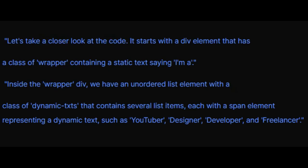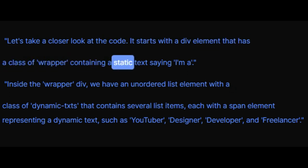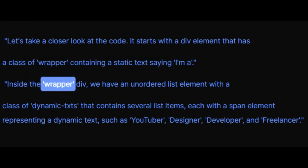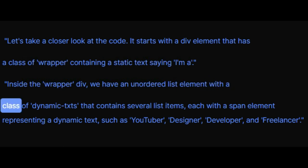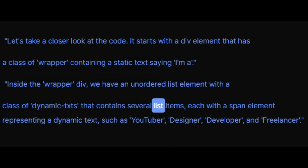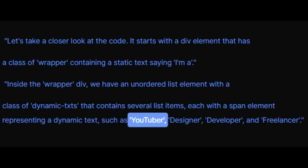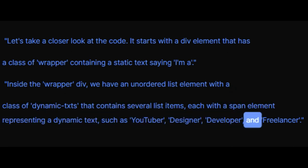Let's take a closer look at the code. It starts with a div element that has a class of wrapper, containing a static text saying 'I may'. Inside the wrapper div, we have an unordered list element with a class of dynamic txts that contains several list items, each with a span element representing a dynamic text such as YouTuber, Designer, Developer, and Freelancer.